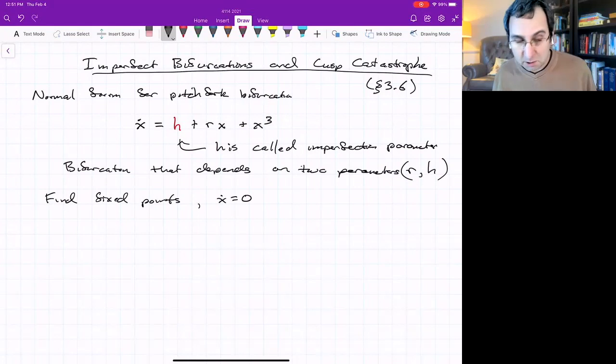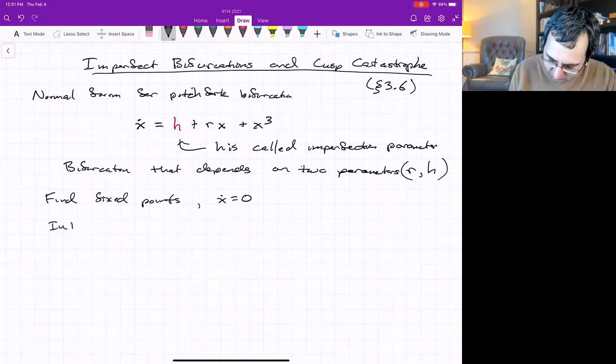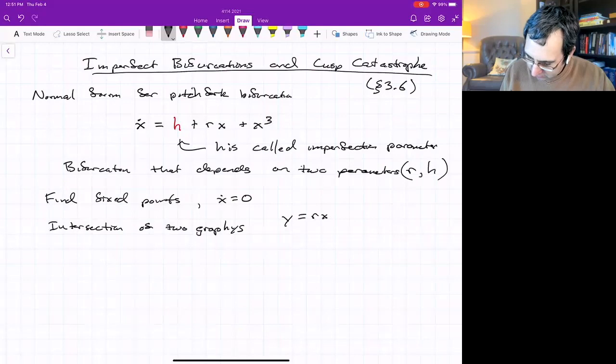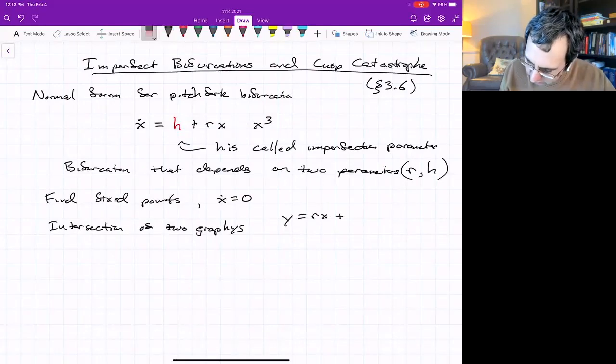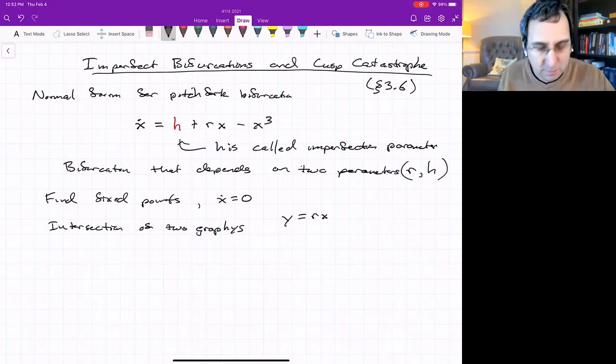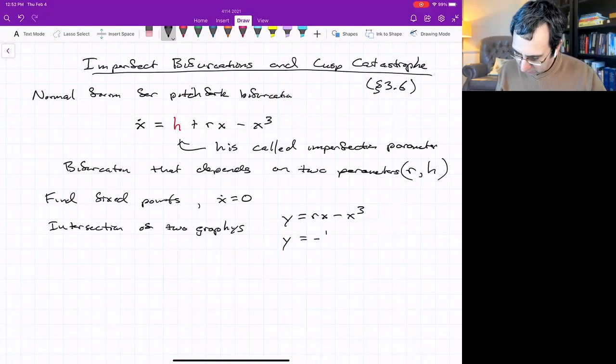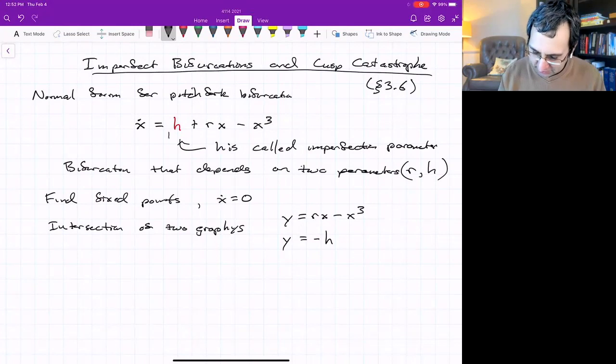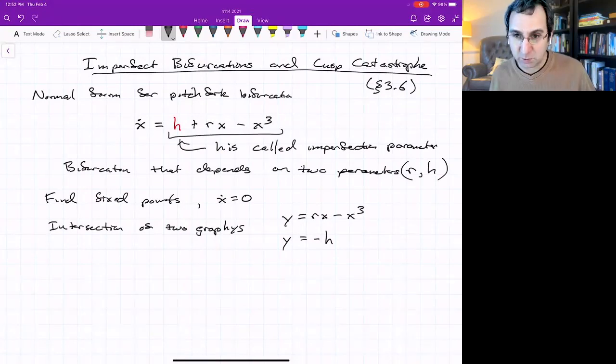If we want to find where the fixed points are, so finding the fixed points, that would be where x dot equals zero. So we could use a graphical method. I mean, we could solve this cubic. I guess it's a cubic in x, or we could use a graphical method. It would be the intersection of two graphs: y equals rx minus x cubed and y equals negative h. Where these two meet, you would have the right hand side equaling zero.